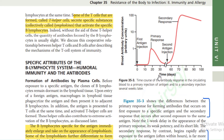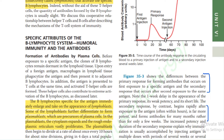Figure 35.3 shows the time course of antibody response in circulating blood to a primary injection of antigen and a secondary injection several weeks later. The primary response forms antibodies on the first exposure to a specific antigen, while the secondary response occurs on the second exposure to the same antigen. The secondary response begins rapidly, is far more potent, and forms antibodies for many months rather than only a few weeks.